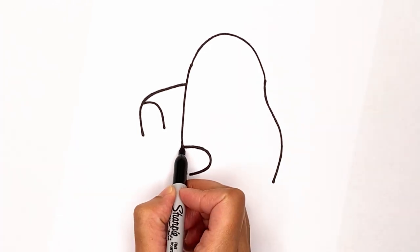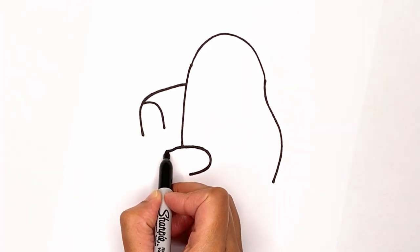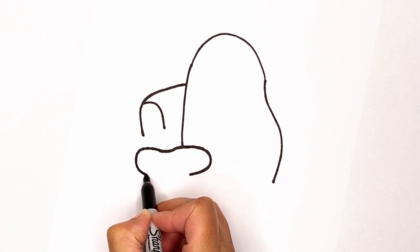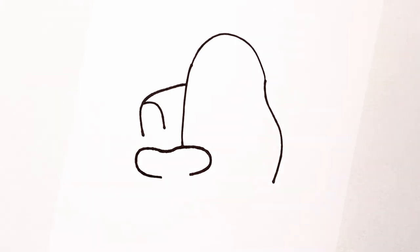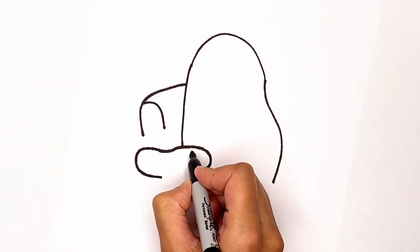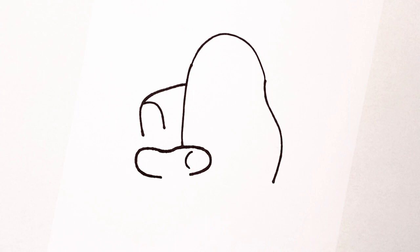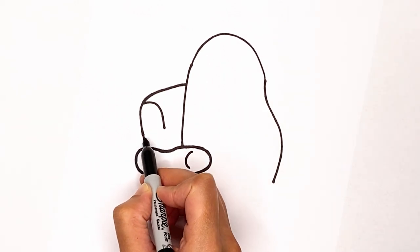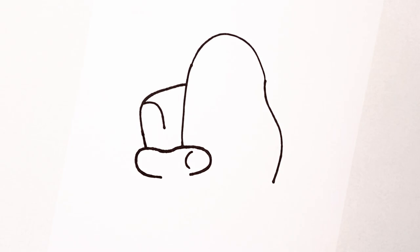And then once you have that, let's make a curve and then go around again and in a bit. Perfect. Now let's draw a curve here and then this side of the couch, you can make it touch that arm. Perfect.